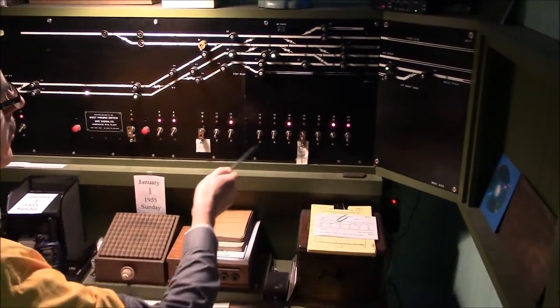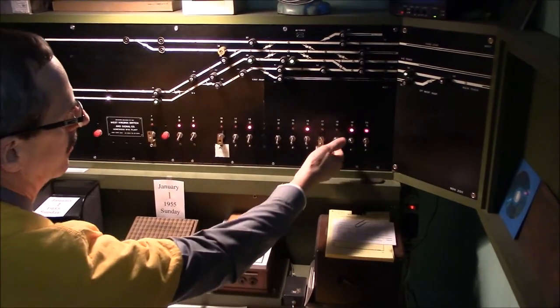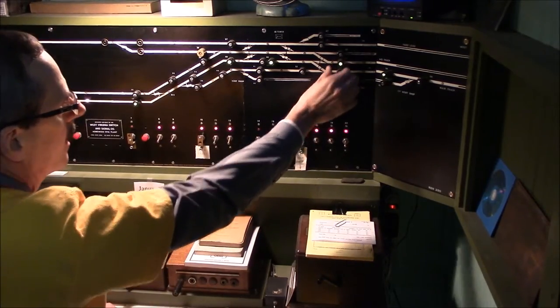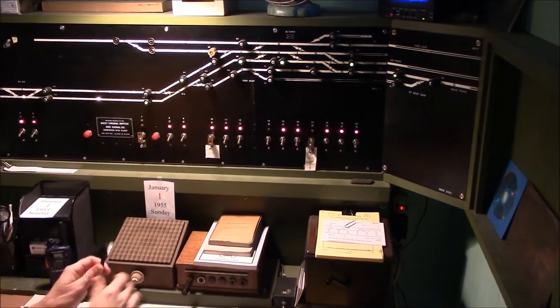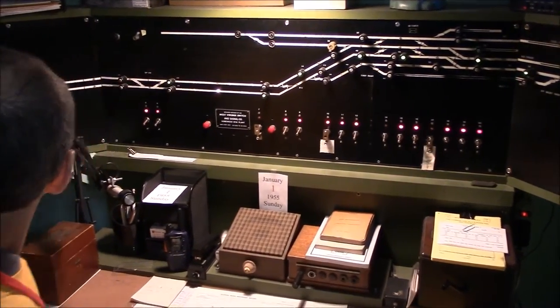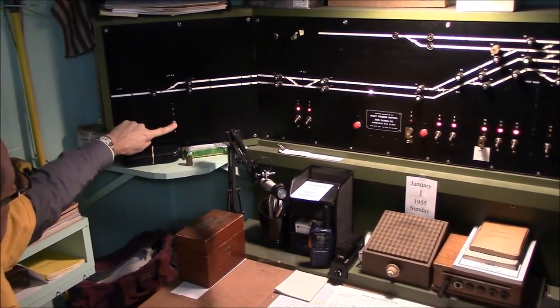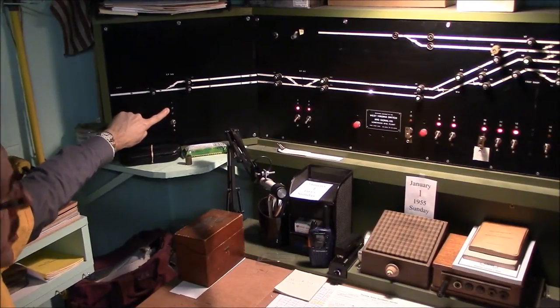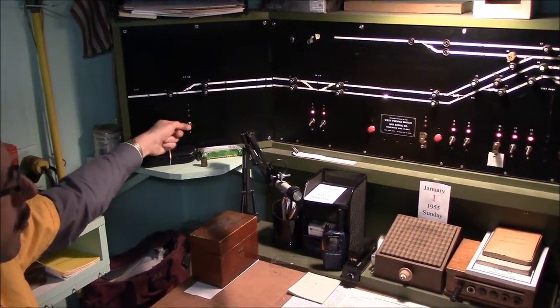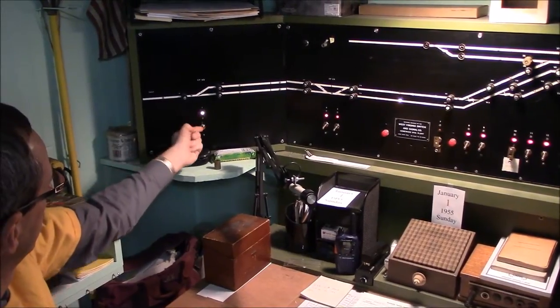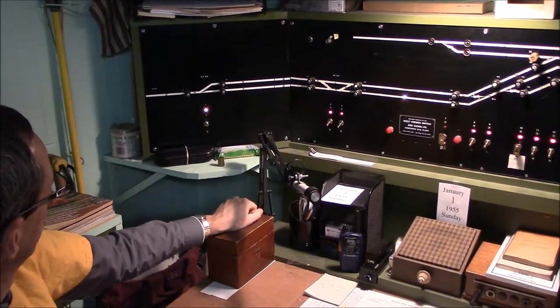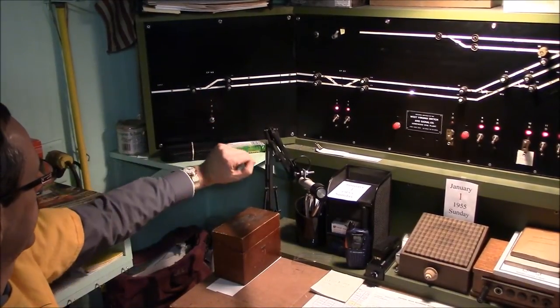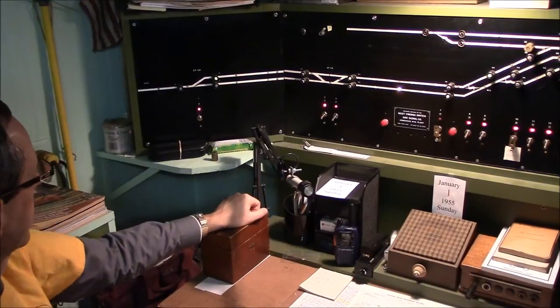Alright, we're going to have a train coming off the AD track here, and he wants to go up the mountain, so I'm going to give him a route. I'm going to throw this switch. And now we're going to line up some signals for him. We're going to throw this switch here. Notice when I raise the toggle that the board moves, and we get a white light here, and that shows that the switch is in motion. They call that an outer correspondence light. When the light goes out, that means that the switch out in the field is in correspondence with the lever. And at that point, I can line up a signal.